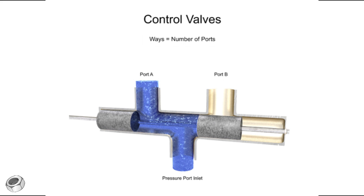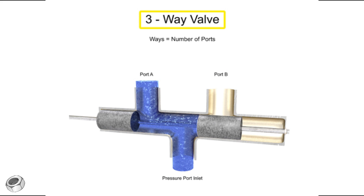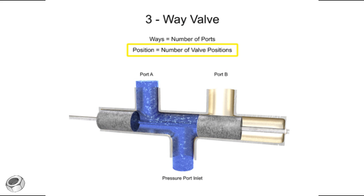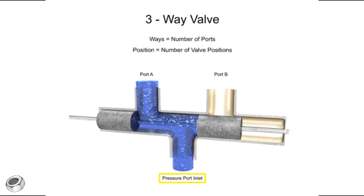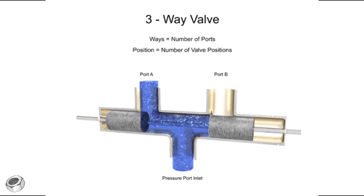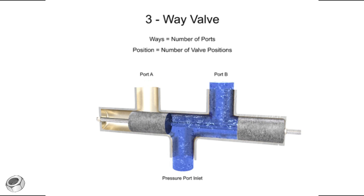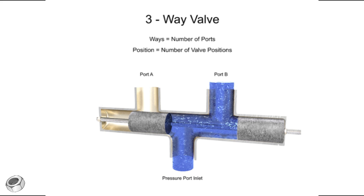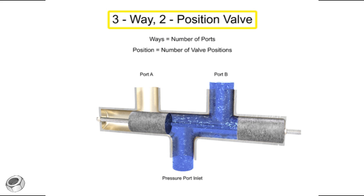This valve has three ports, so it is a three-way valve. The term position refers to the number of discrete operating positions of the internal valve element. For this spool valve, one position allows fluid to flow from the inlet to port A, and a second position allows fluid to flow from the inlet to port B. Therefore, this is a two-position valve.